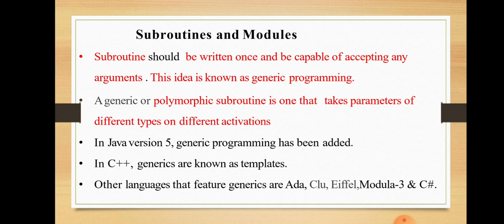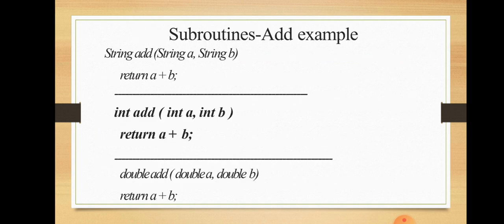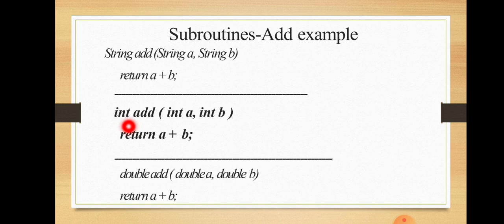In a generic subroutine, the first subroutine adds only two strings and returns a string result. The second subroutine adds two integer values and returns an integer result. The third subroutine adds two double values and returns a double result. So depending on what type of arguments you pass — string, integer, or double — a different subroutine is needed.